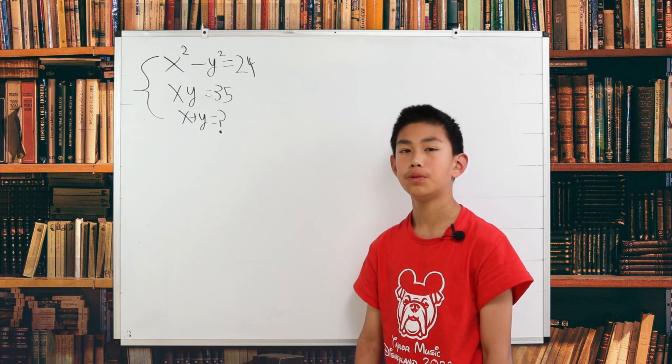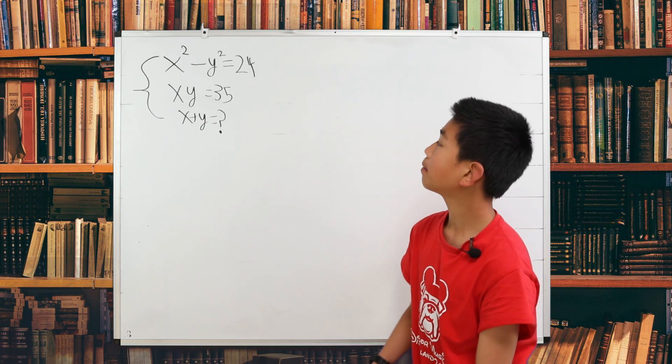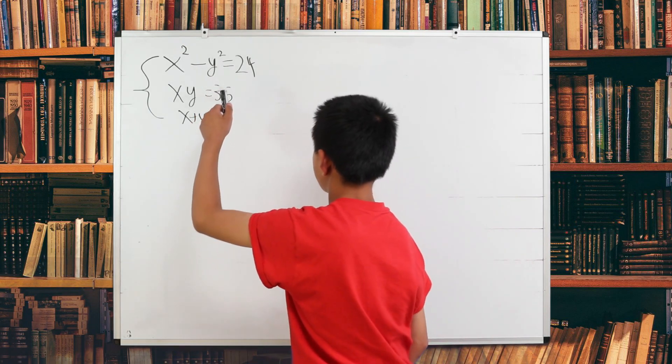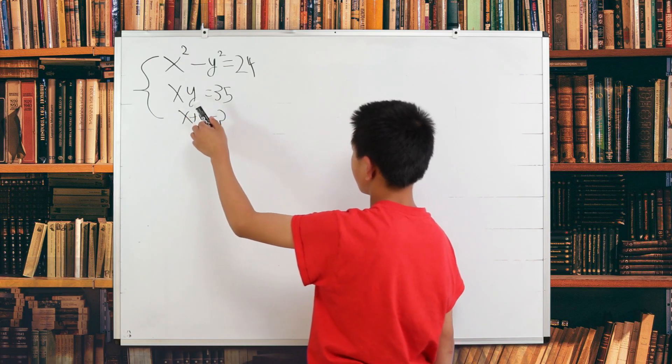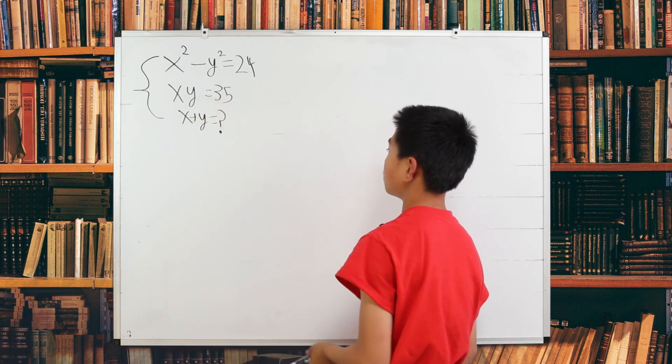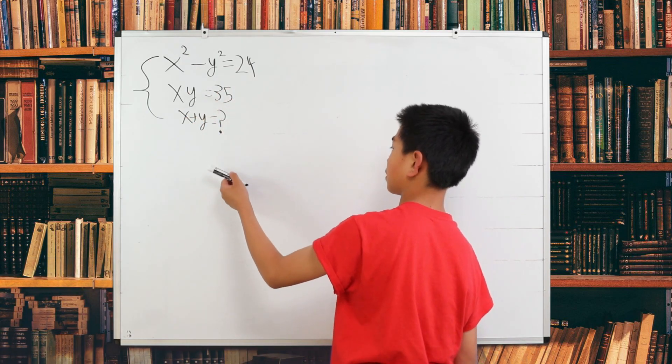Right here we have a problem where we are given that x squared minus y squared is 24, x times y is 35, so what we need to find is what x plus y is.